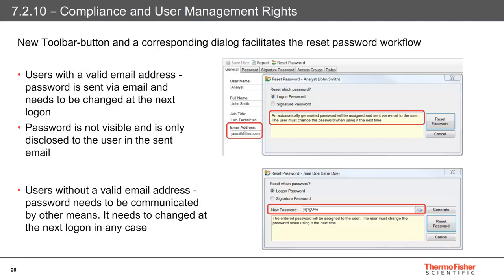When editing a user in the user database, a new toolbar button called Reset Password is now available. This option provides a corresponding dialogue to facilitate the workflow involved for resetting passwords. For users with a valid email address, the new password is emailed to the selected user and is not disclosed to the administrator who executed the reset. The new password is generated randomly and must be changed the next time the user logs into a Chameleon client or the administration console. Where users have records with an empty email address, an administrator can manually enter a new password or generate one randomly. The currently visible password in the new password field becomes the new password of the selected user, and the user must then change this password the next time they log in.